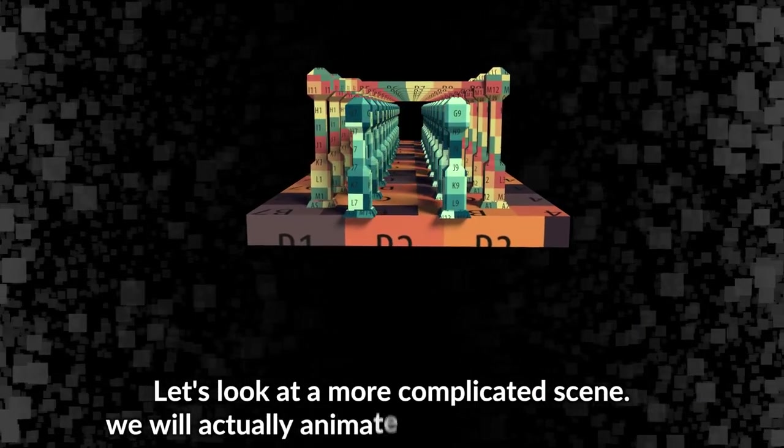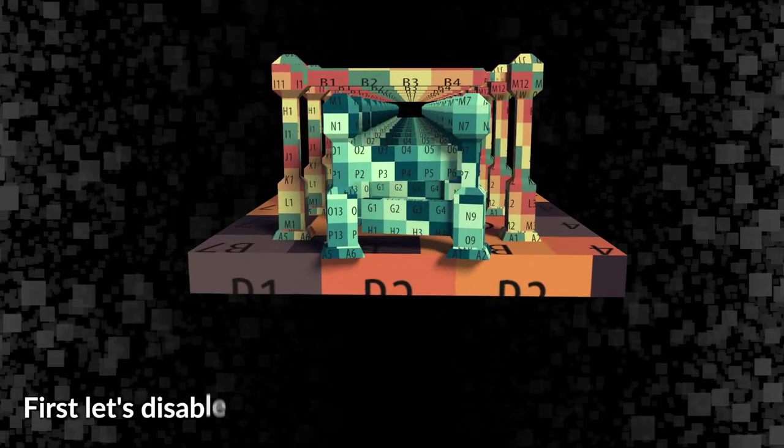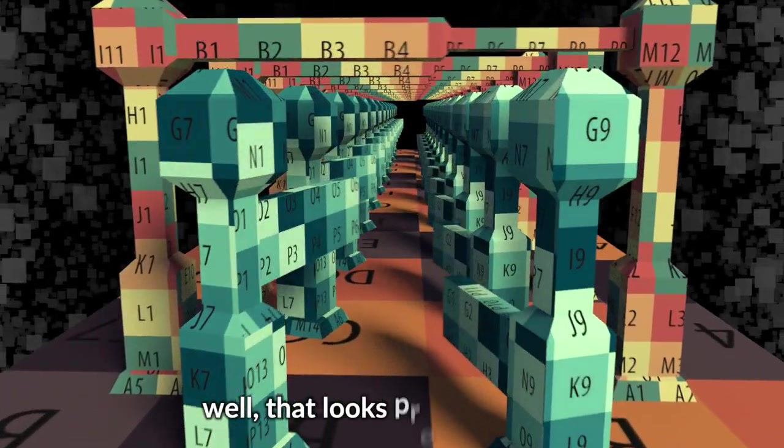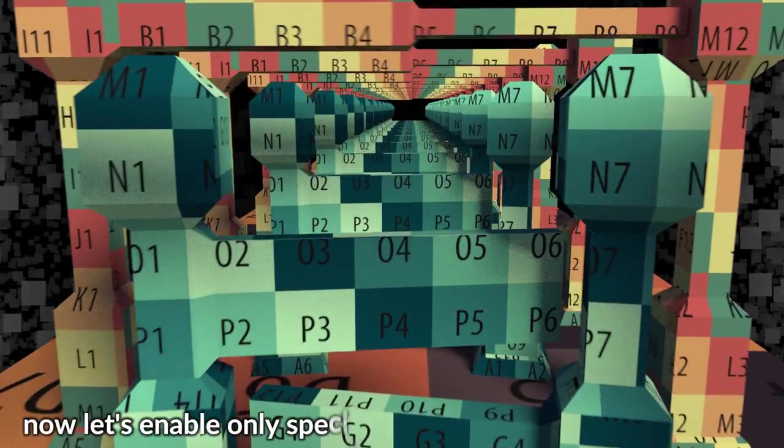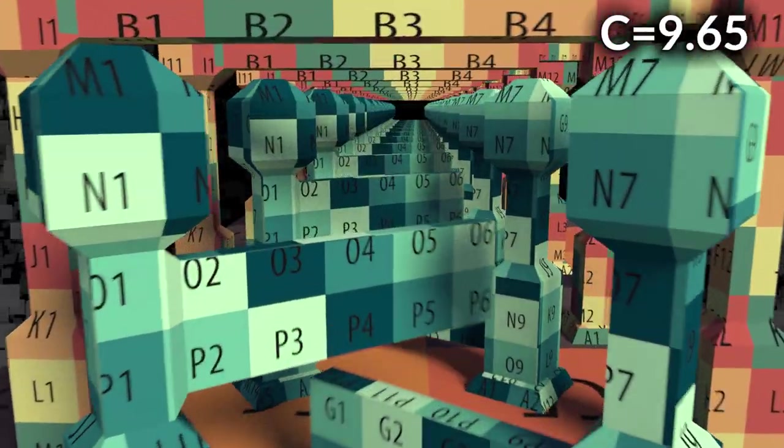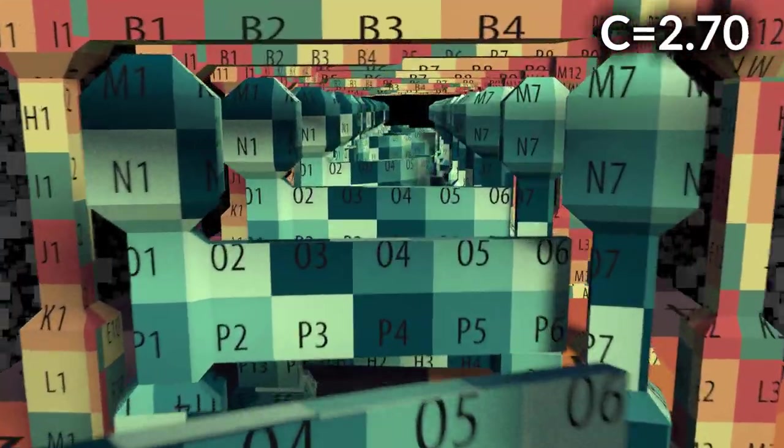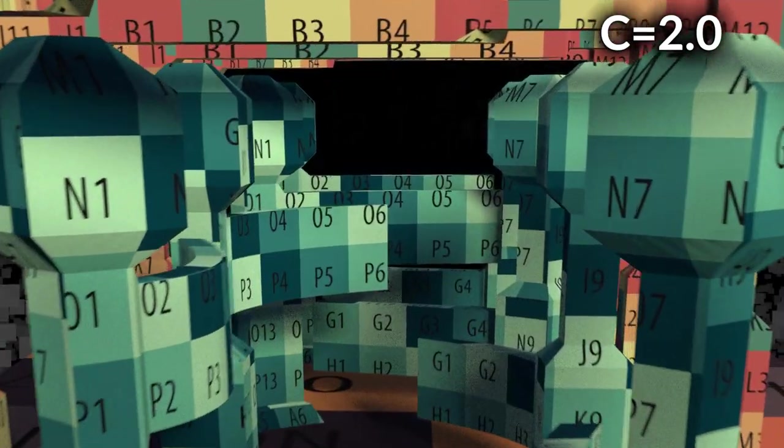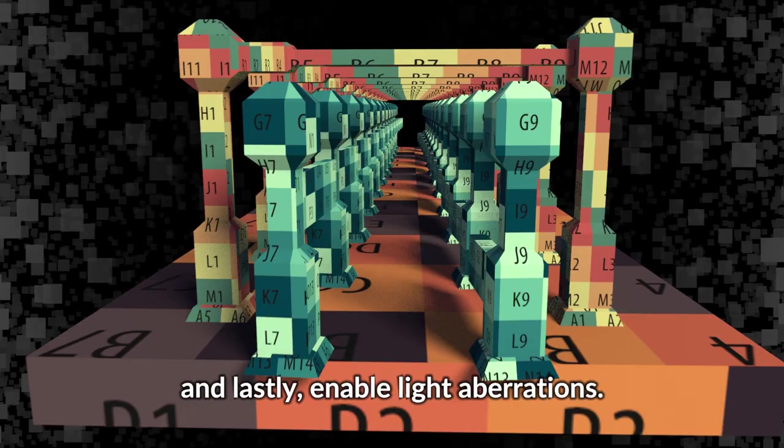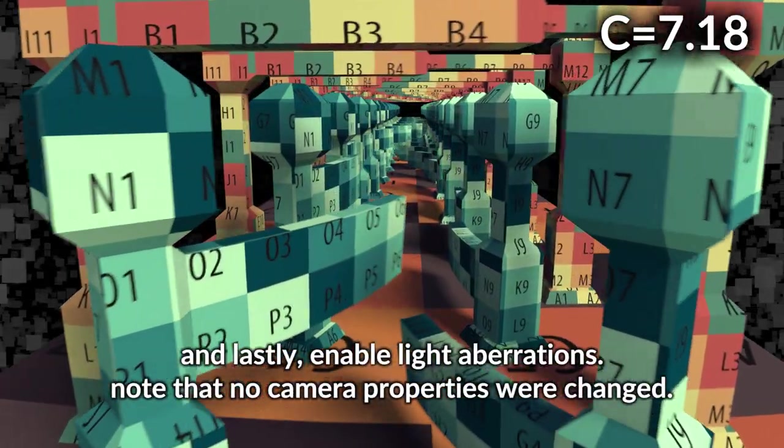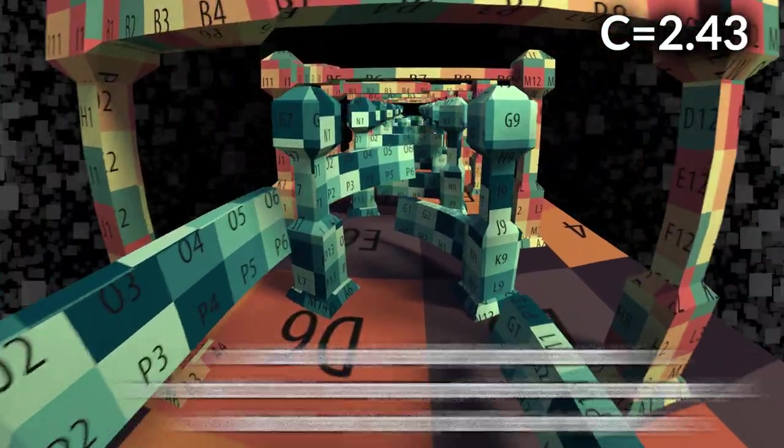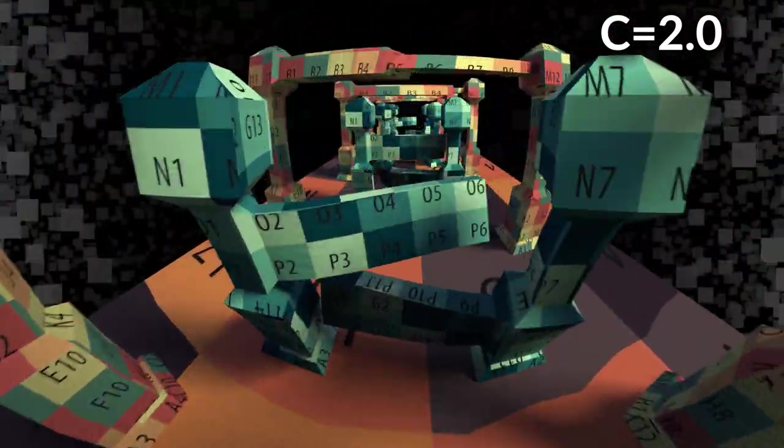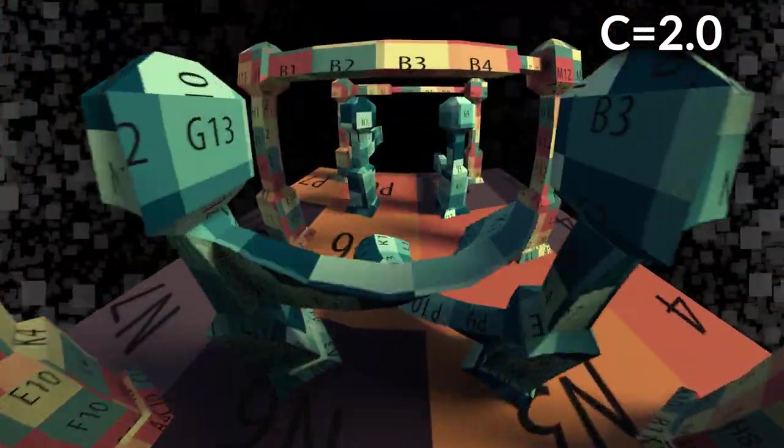Let's look at a more complicated scene. We will actually animate the speed of light here. First let's disable light aberrations and space-time distortions - well that looks pretty standard. Now let's enable only special relativity space-time distortions. Now we are getting somewhere. And lastly, enable light aberrations. Note that no camera properties were changed. Look how bendy and fluid everything is now.